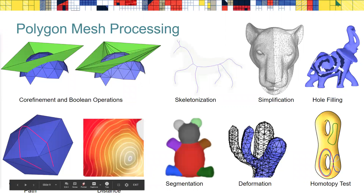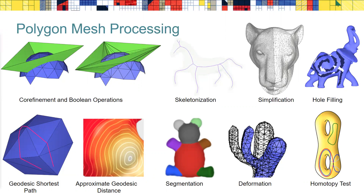Let me go through some polygon mesh processing algorithms as they are somehow at the core of SGP. Corefinement is the simultaneous subdivision of intersecting meshes. Here we have a green mesh and a blue mesh, and we want the two meshes to conform so that the initial faces get split and the edges of the green and blue meshes conform. That's the basis for Boolean operations.